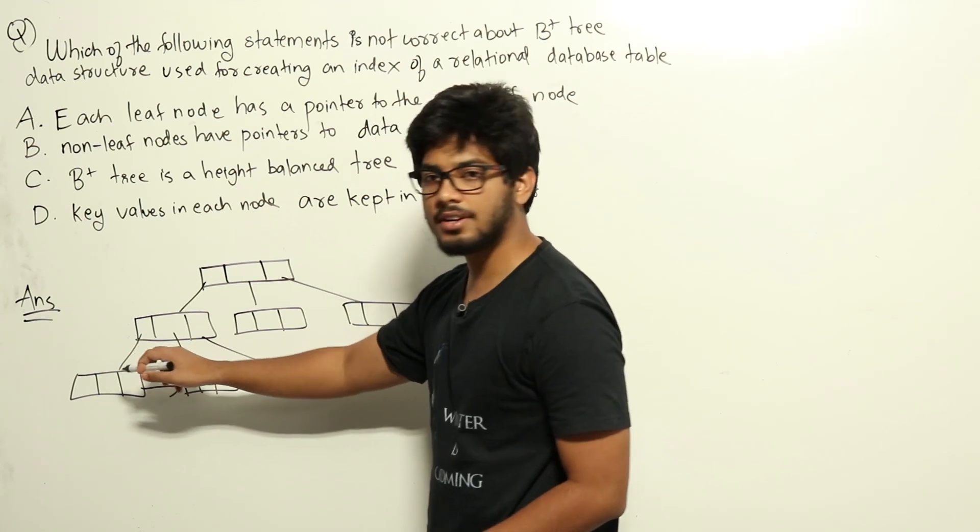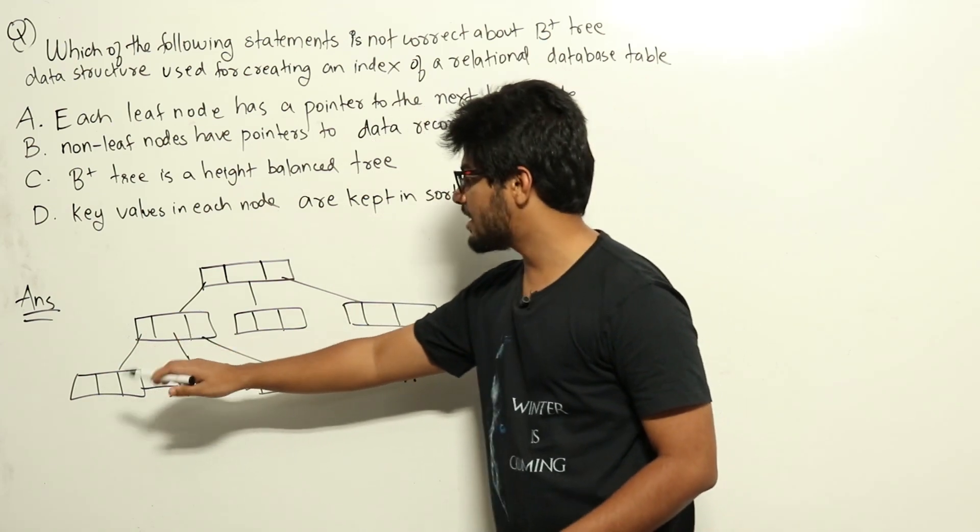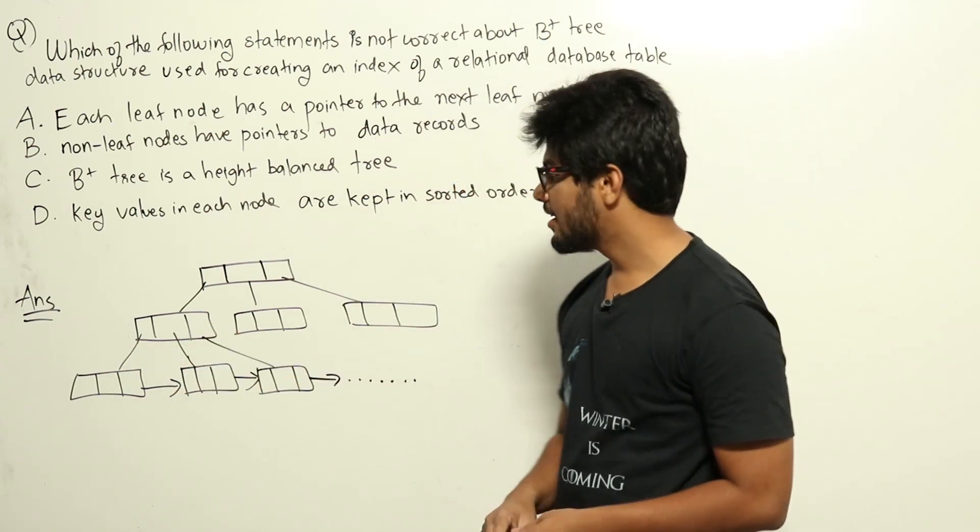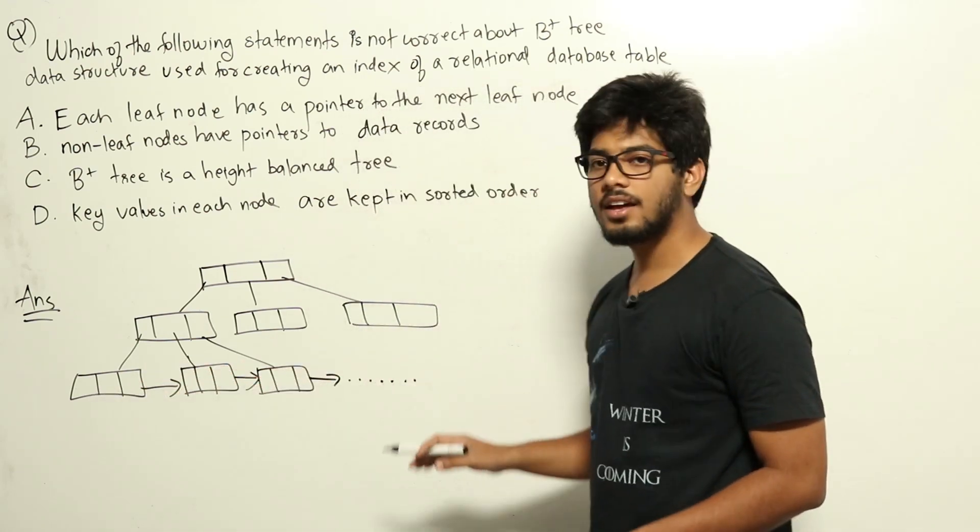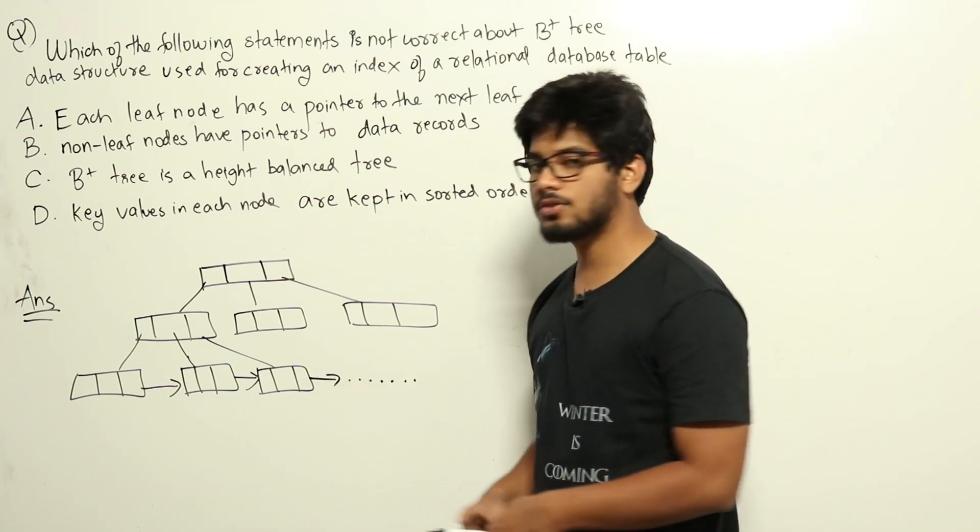they will also contain key value pairs. But here the value of each key would be pointers to data records. Additionally, each leaf node will also have a pointer to the next leaf node. That is used for sweeping the entire data or range queries.